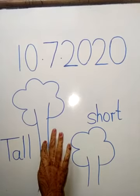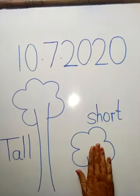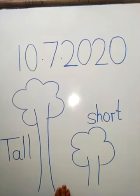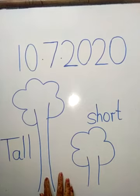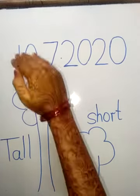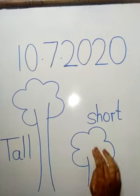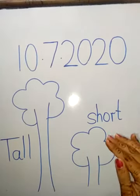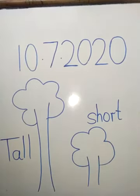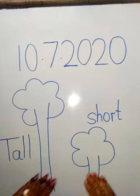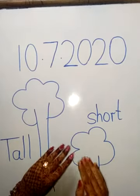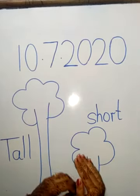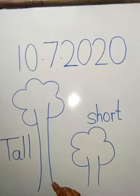This is a tall tree and a short tree. Why is it tall? Because of its height. And why is this short? Because its height is small. Like your height is small — that means you're short. And mom and dad are bigger in height, so they are tall.